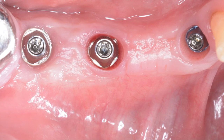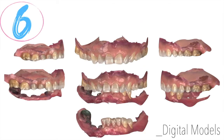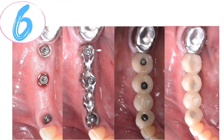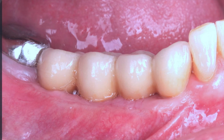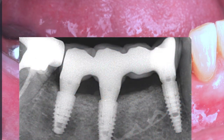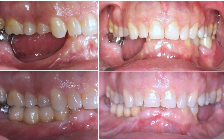After waiting two to three months for keratinized tissue integration, we begin the digital prosthetic phase. Digital impressions are taken to produce digital models for ceramometal crowns over multi-unit abutments. The final crowns show perfect adaptation in the patient's mouth, with stable peri-implant marginal bone and a stable regenerated area. A comparison between the starting point and the final metal-ceramic prosthesis demonstrates the excellent outcome.